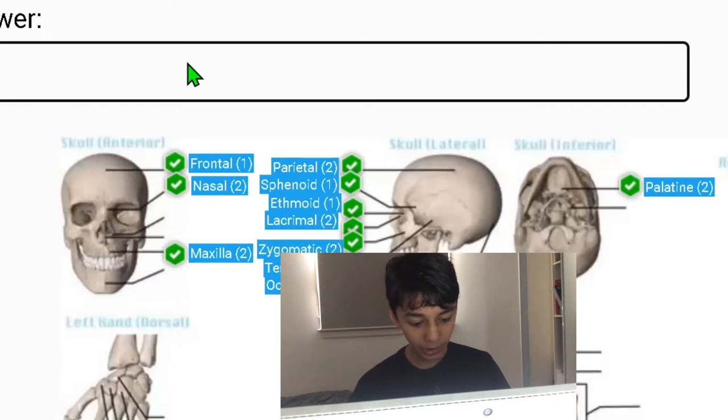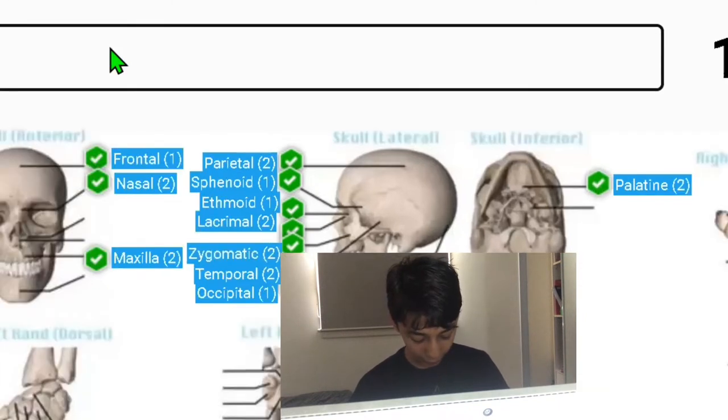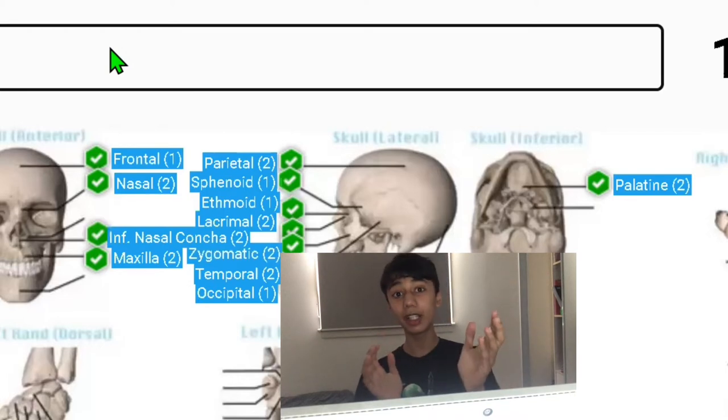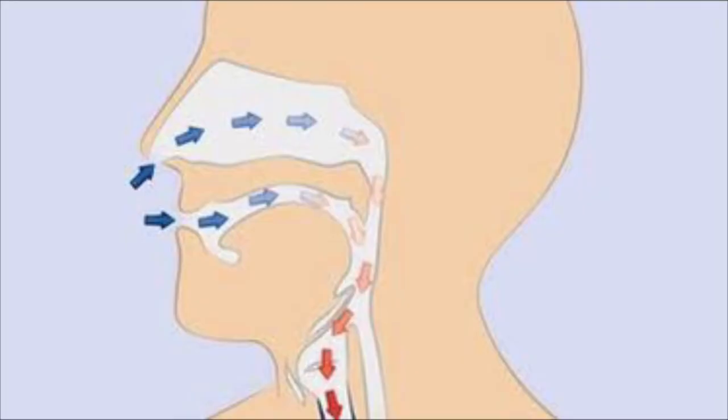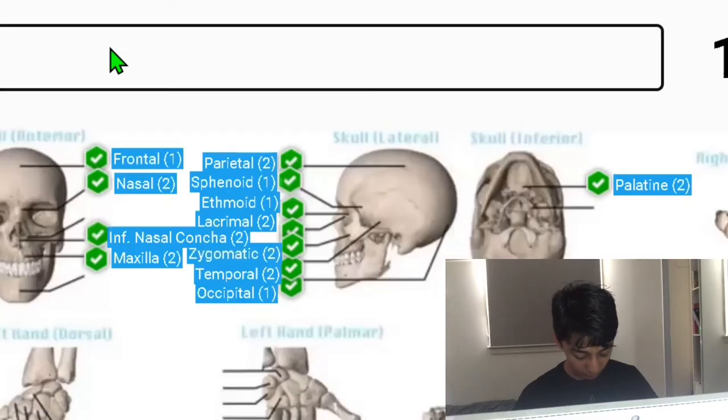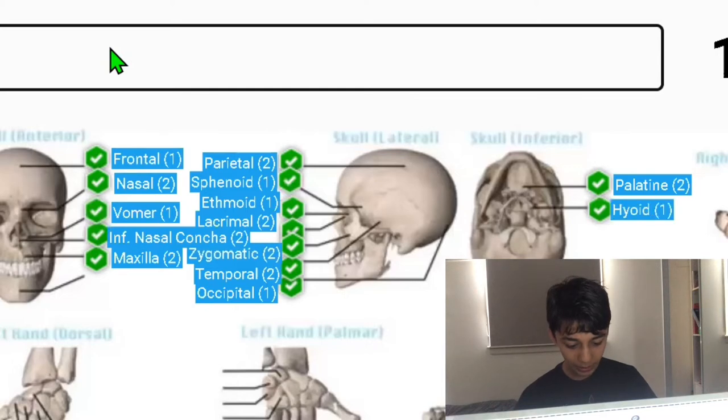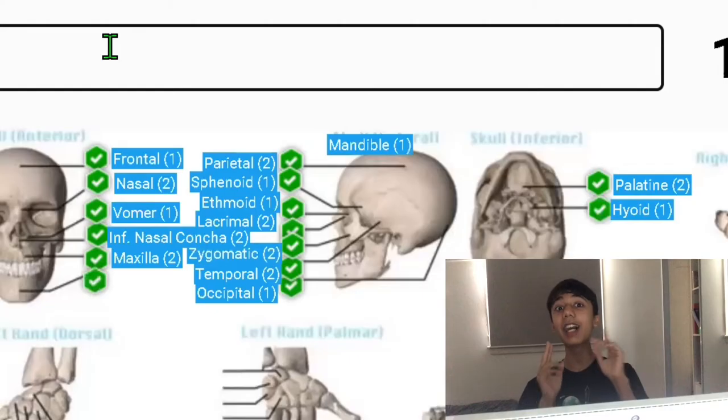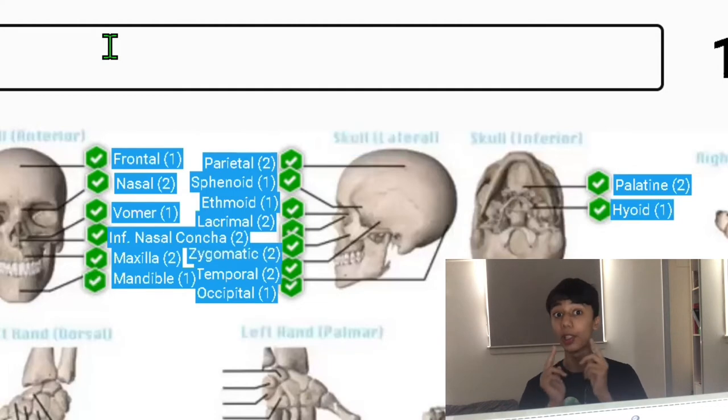Next we have the concha or the inferior nasal concha which basically increases surface area for warming and humidification of air and protects your sinuses. Then the vomer, hyoid, mandible which aids in mastication or chewing as it supports the teeth on the lower jaw.